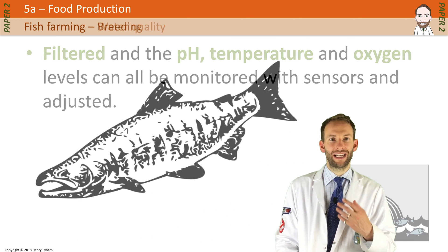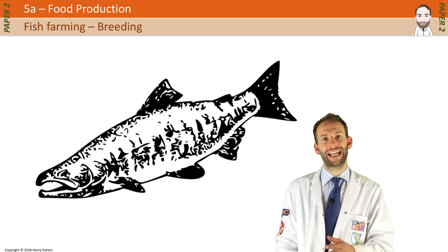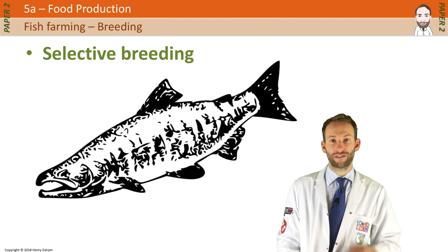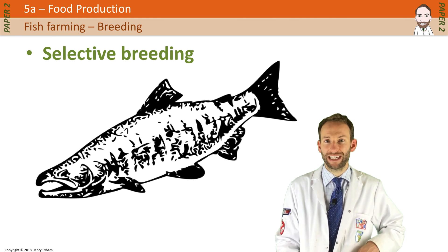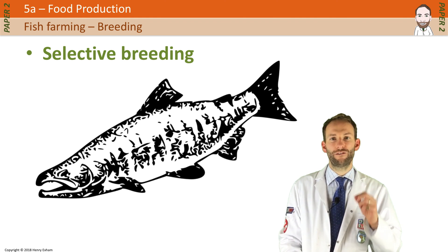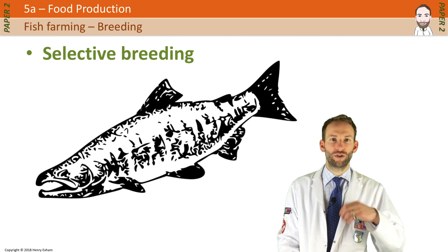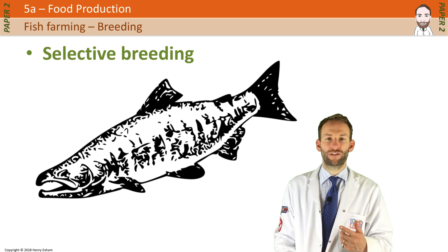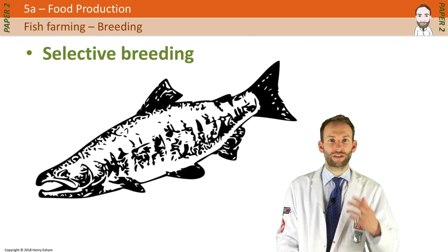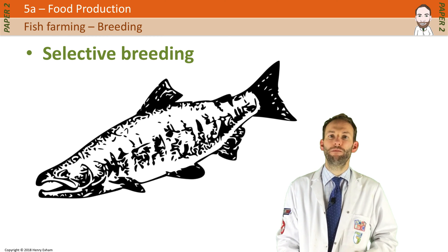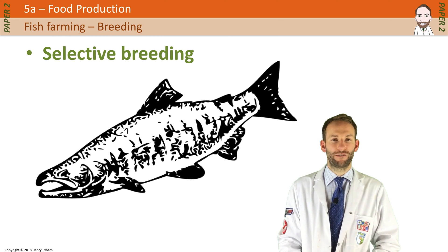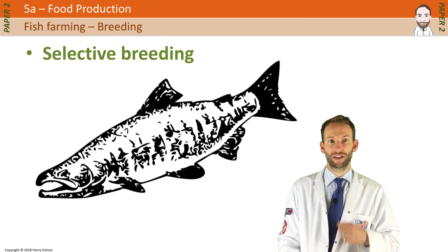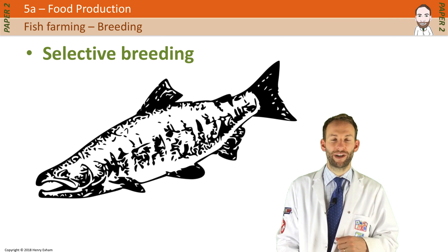Fish which are naturally healthy, large, and require less food to grow are the ones selected for breeding. After a few generations of selective breeding you will get an ideal fish which will be able to grow very rapidly without being fed as much food. That's obviously going to maximise yield and therefore maximise the profit for the farmer. There is a detailed explanation of how selective breeding works in one of my other videos.